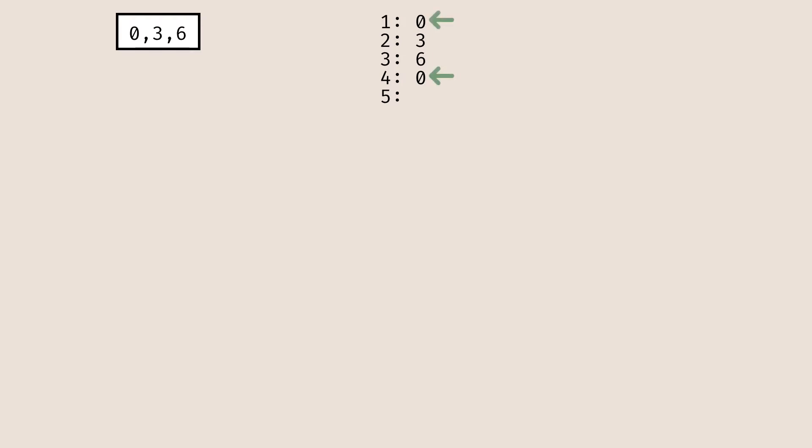To generate my fifth number, I look at my last number of zero and locate where it appeared previously. It also appeared at index one. So I look at these two positions — it appeared at index four latest and index one previously. Taking the difference between four and one gives a result of three, which will be the next number of my sequence.